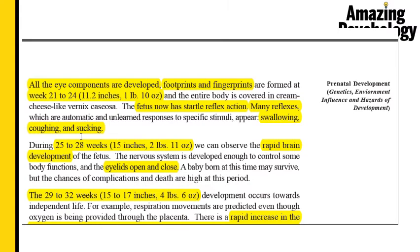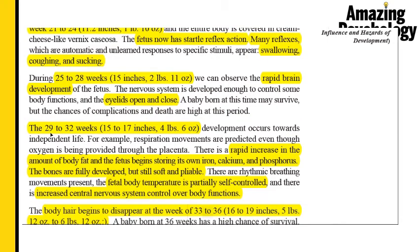Between weeks 25 to 28, the fetus grows to about 15 inches and weighs about 2 pounds and 11 ounces. There is rapid brain development, the nervous system is quite developed, and the eyelids open and close. A baby born at this time has a good chance of surviving but there might be complications.